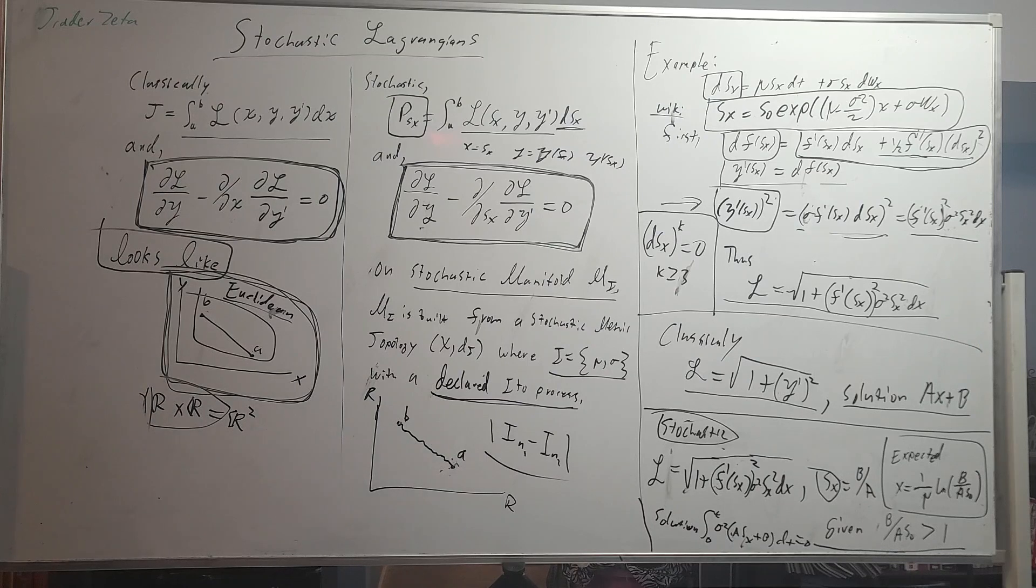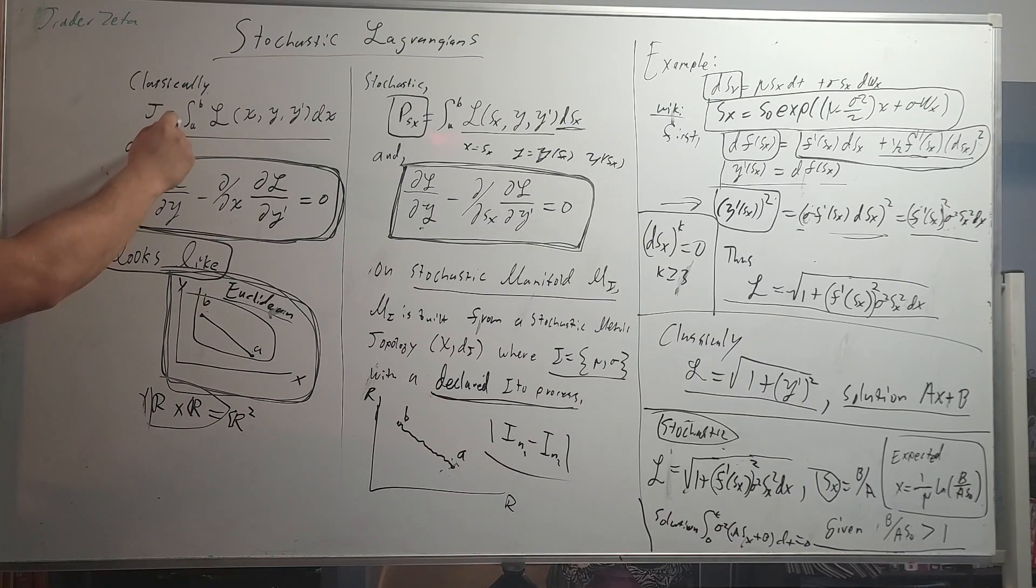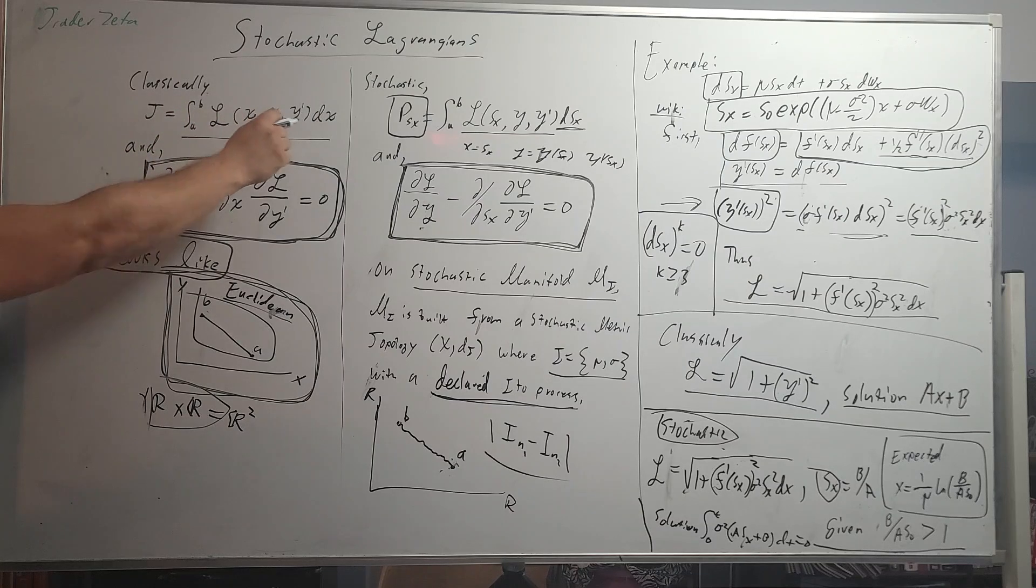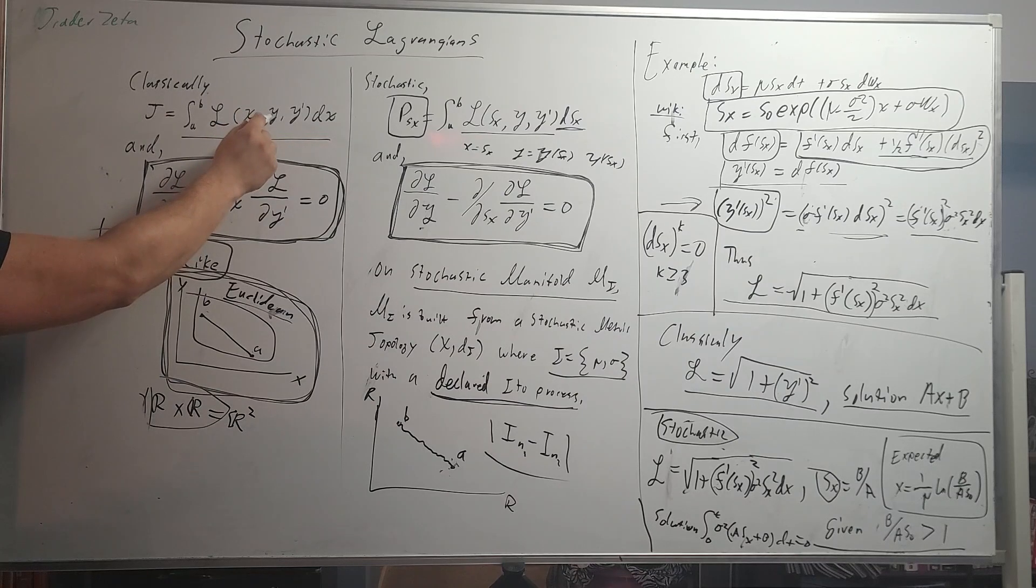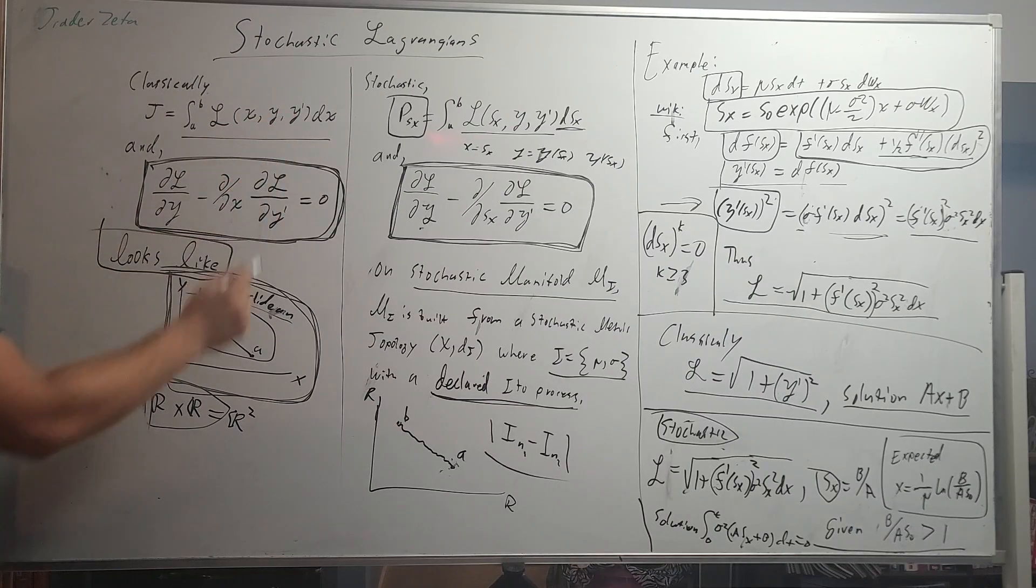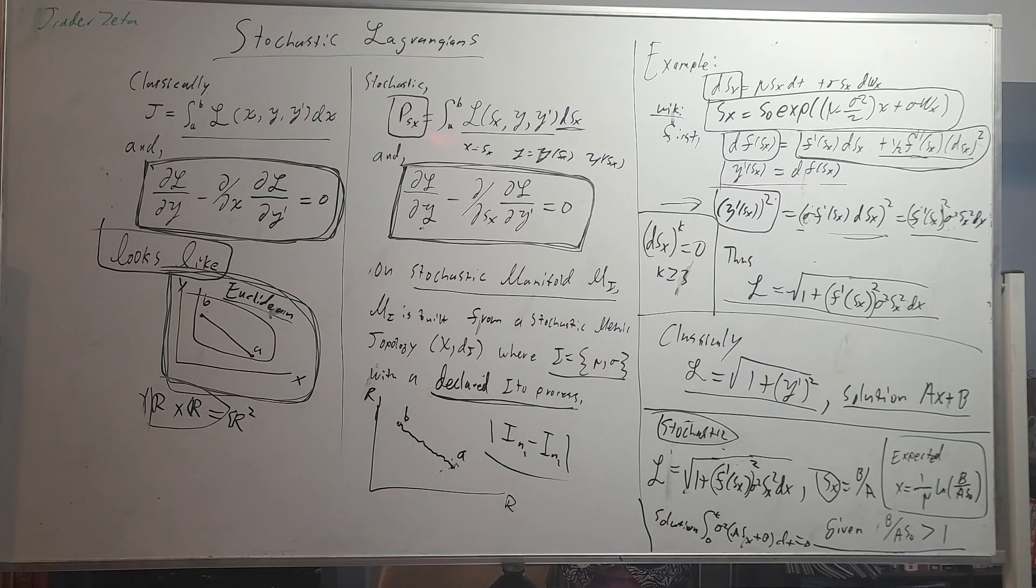Classically Lagrangian mechanics are in this form. You have J equals integral a to b of some Lagrangian function dx, and inside the Lagrangian you maybe have a variable of x, some y of x, maybe some y prime of x.